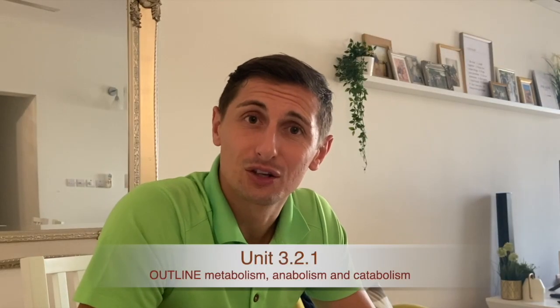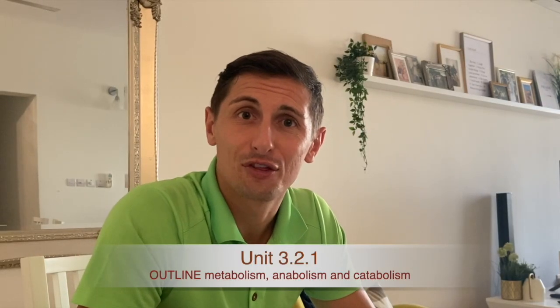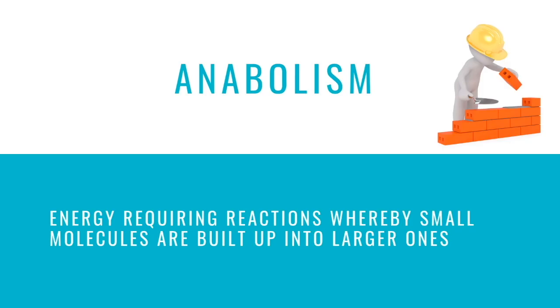The first point we need to look at today are three key terms: metabolism, anabolism, and catabolism. Anabolism is a little bit like building blocks — it's referring to how smaller molecules are built together to create larger molecules. An example of this is when glucose is stored as glycogen within our body; that is an example of an anabolic reaction.